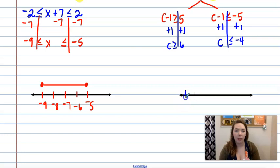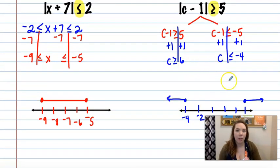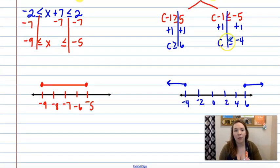So on my number line, I'm going to count by 2's here. Anything larger than 6 is a solution, and anything smaller than negative 4 is a solution. And again, I'm using the filled in dots because we have the or equal to underneath here.